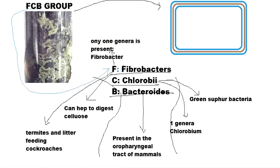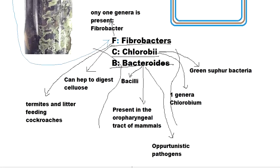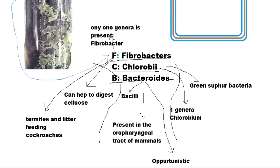Bacteroidetes are present in the oropharyngeal tract of mammals and are usually not harmful. However, they are opportunistic pathogens. Opportunistic pathogens cannot harm an individual when the immune system is functioning properly, but when the immune system becomes weak, these bacteria can cause deadly diseases — hence they are called opportunistic, as they search for an opportunity.